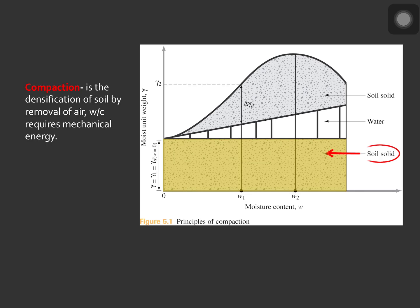When water is added during compaction, it acts as a softening agent on the soil particles. The soil particles slip over each other and move into a densely packed position. The dry unit weight after compaction first increases as the moisture content increases.